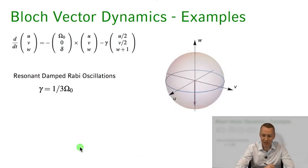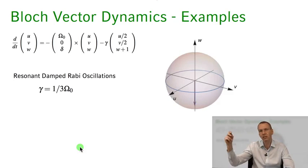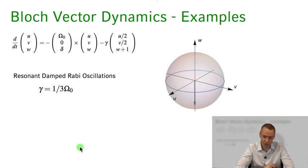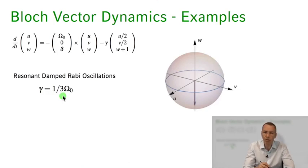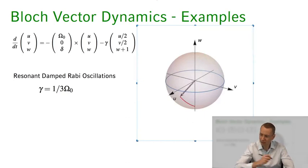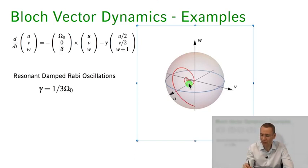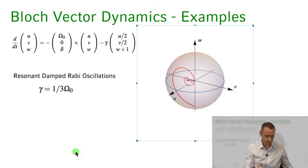Let's add damping now. With damping, we expect initial oscillations followed by the system settling into a steady state. I've numerically integrated the differential equations for the resonant case — delta equals zero — with a small damping of gamma equal to one third of the resonant Rabi frequency. We see the Bloch vector starts rotating around the u-axis but gets more and more damped, and settles into the steady state inside the Bloch sphere. This is the steady state solution we made use of in calculating scattering properties of light interacting with this two-level atom.